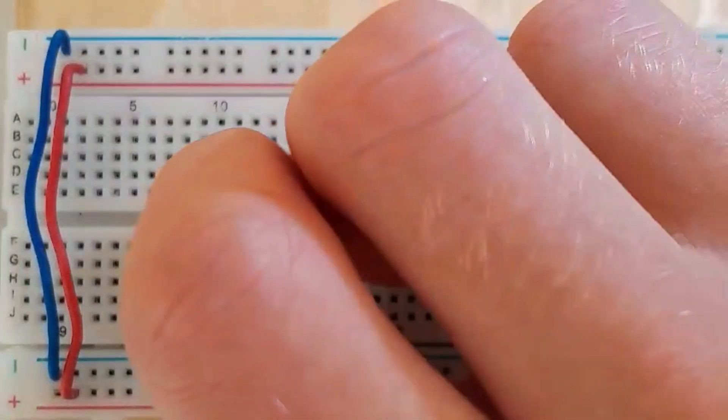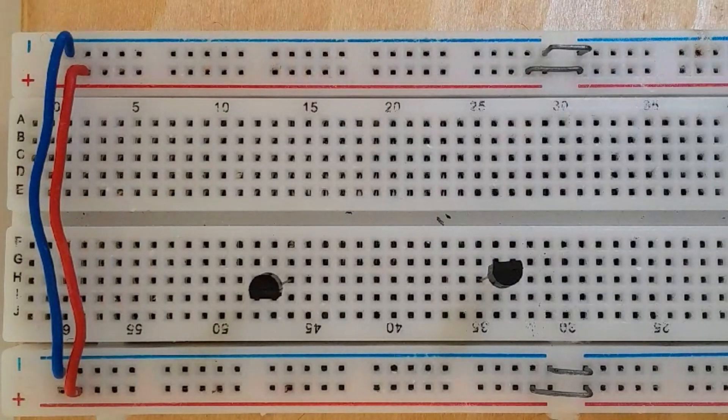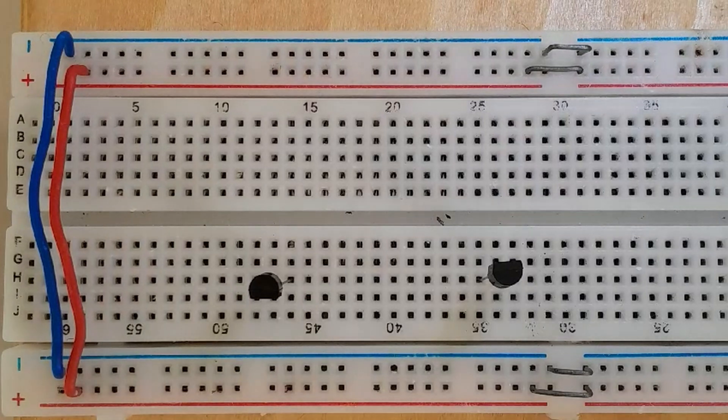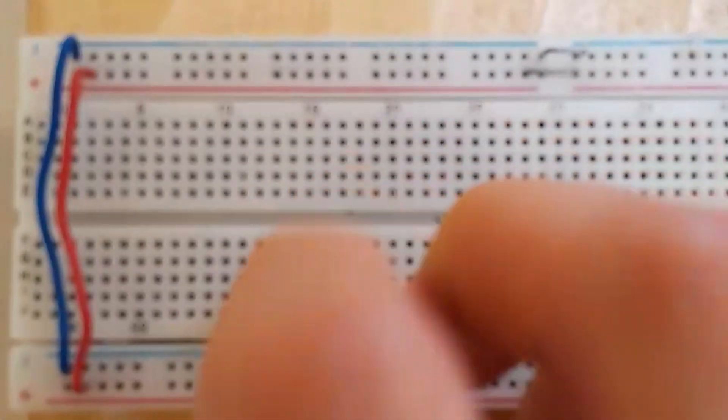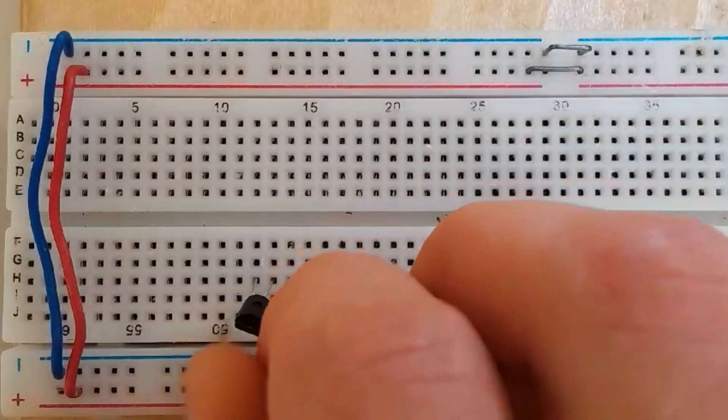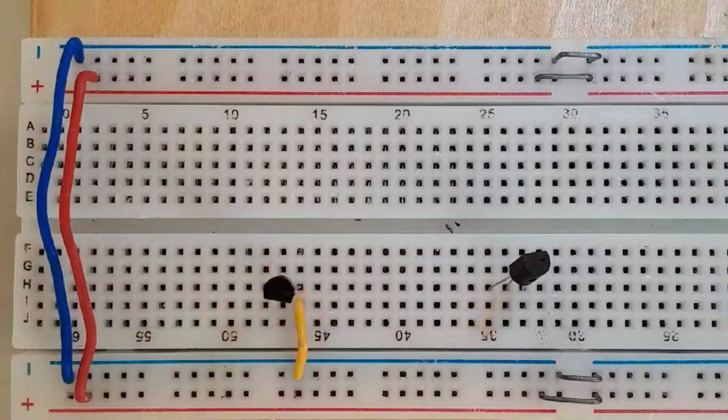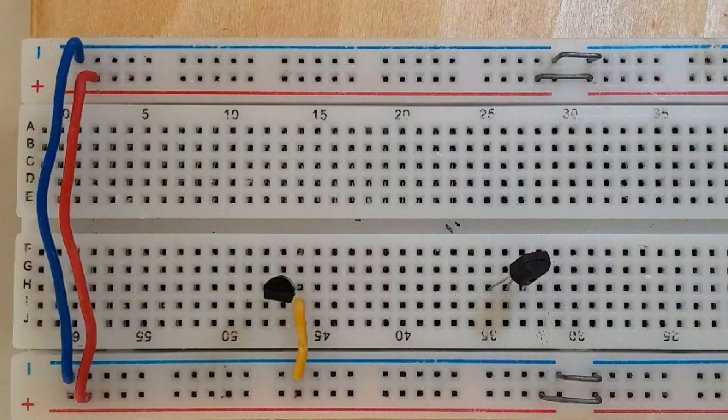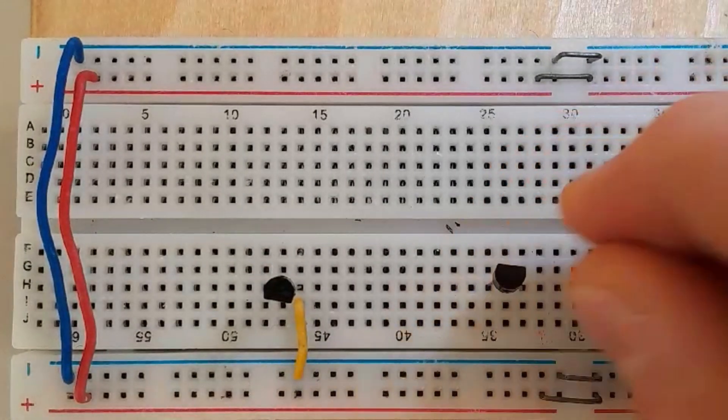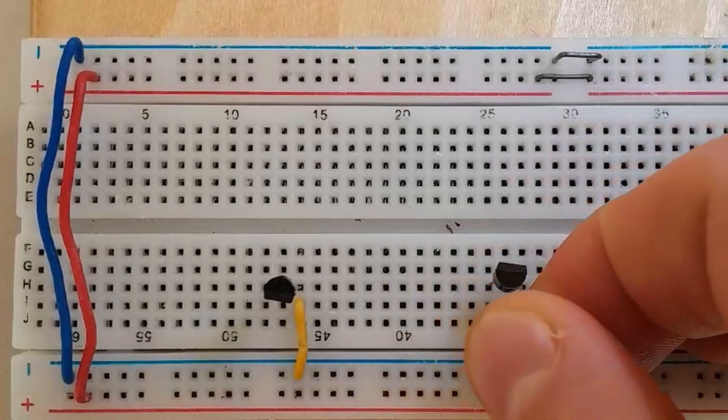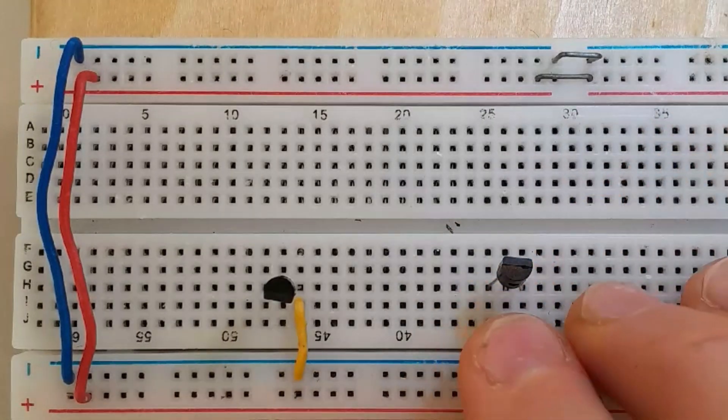You're going to connect the emitter to ground like this. Then you're going to connect the other one to ground, the emitter of the other transistor to ground like this.